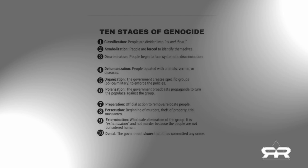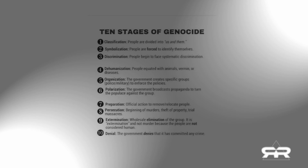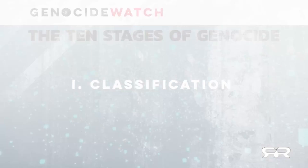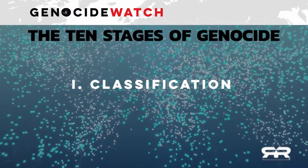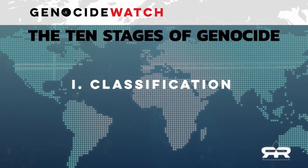The 10 stages of genocide is a model of the genocidal process. We can use this model to clearly demonstrate the level of genocide many of us are facing today. Stage one: classification.